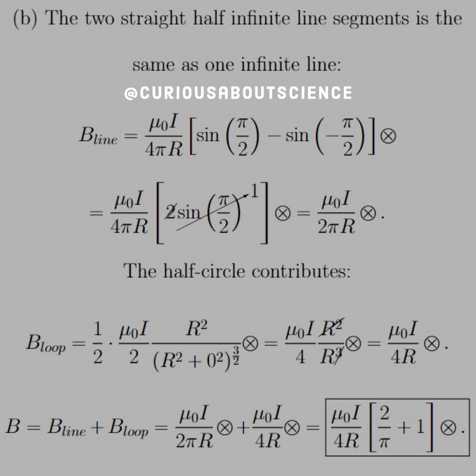And we're left with the segments of line adding up to mu naught I over two pi R. Again, the direction via the right hand rule is into the page at P.